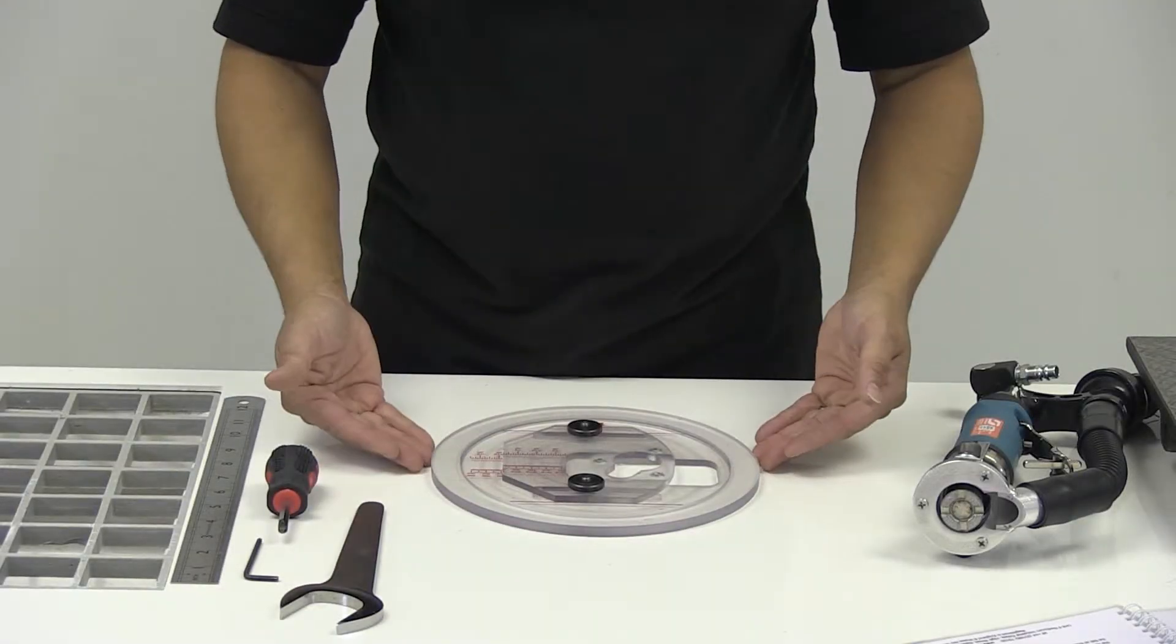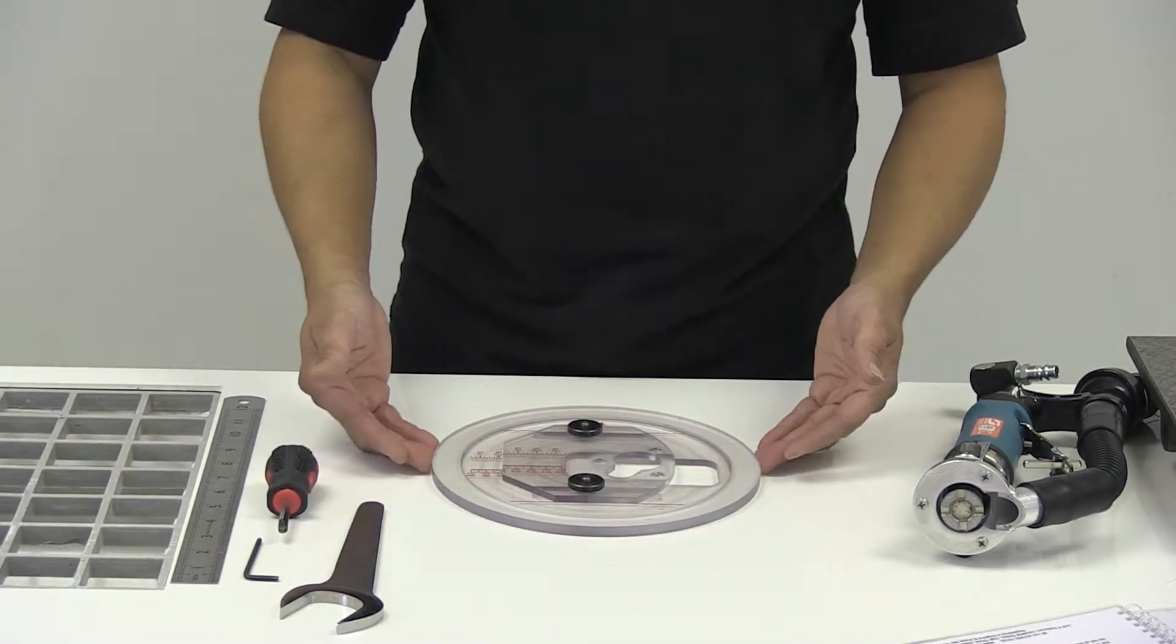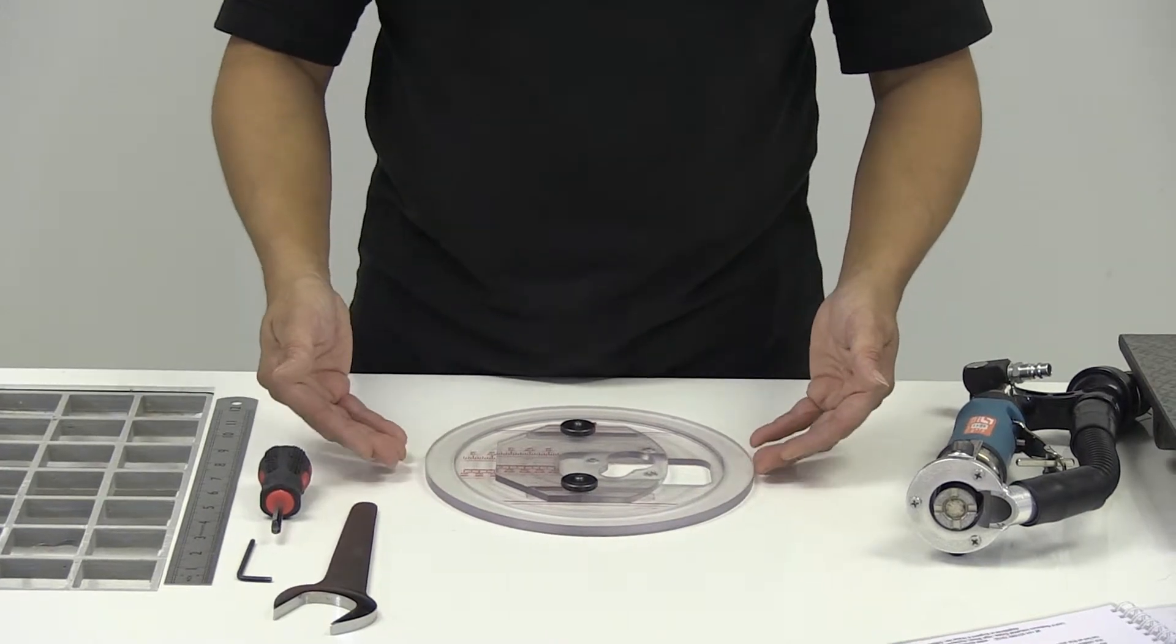So, this is the small circle jig. This is for removal of materials at the centre of the repair, very small diameters.